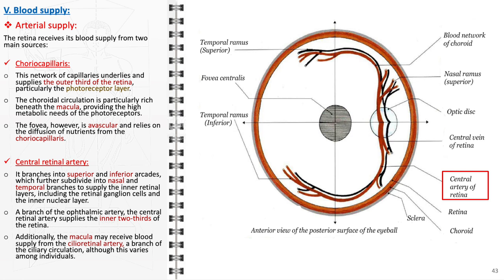In some individuals, the macula also receives blood supply from the cilio-retinal artery, an ancillary branch of the ciliary circulation. This artery, when present, provides an additional source of blood flow to the macula, further supporting its critical visual functions.